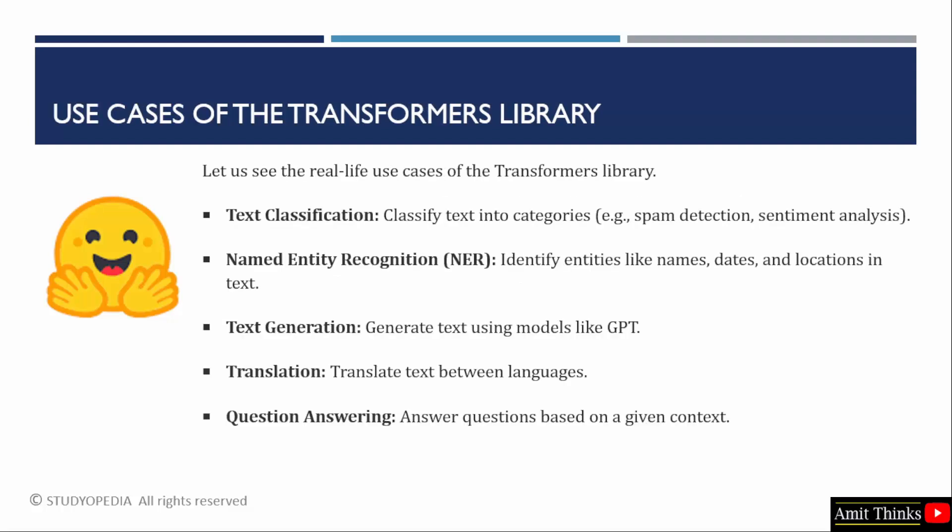Here are some use cases of the transformers library. Classify text into categories like text classification — for example, spam detection in emails. Identify entities like names, dates, and locations in text, which is called named entity recognition. Translate text between different languages, like from English to German. Generate text using models like GPT. Also, implement question answering — that is, to answer questions on the basis of a given context.